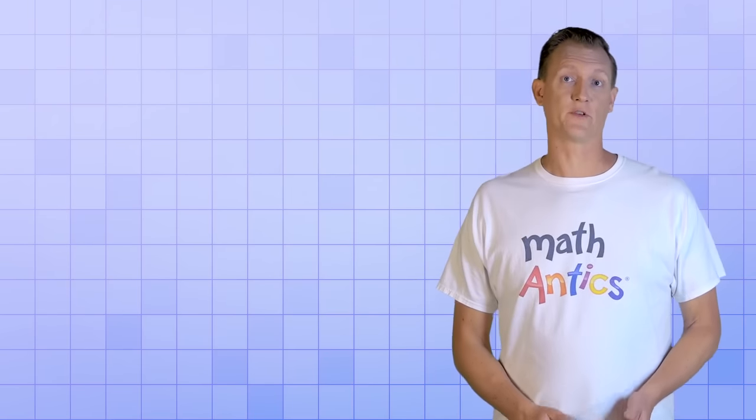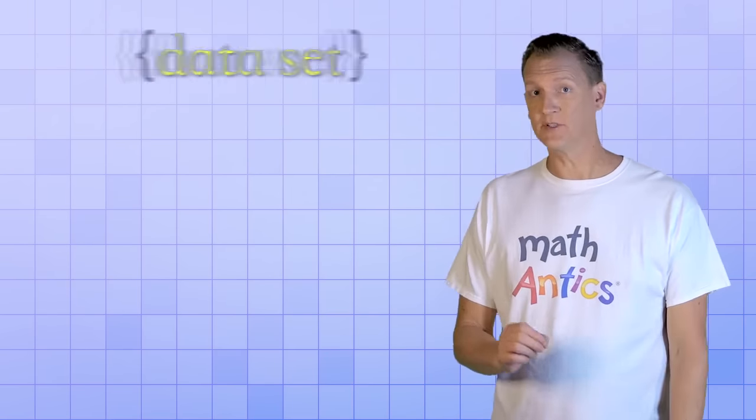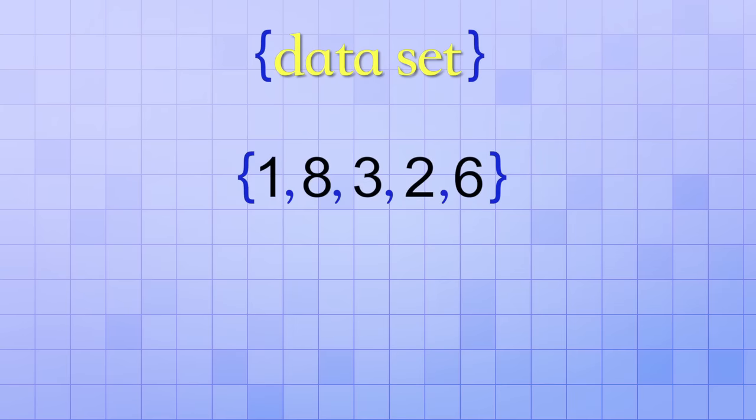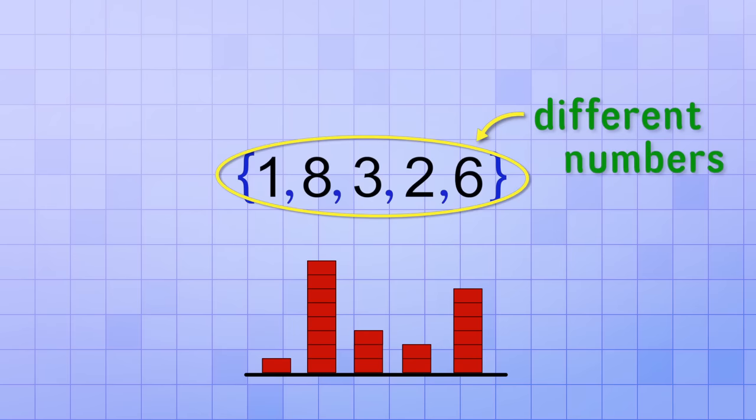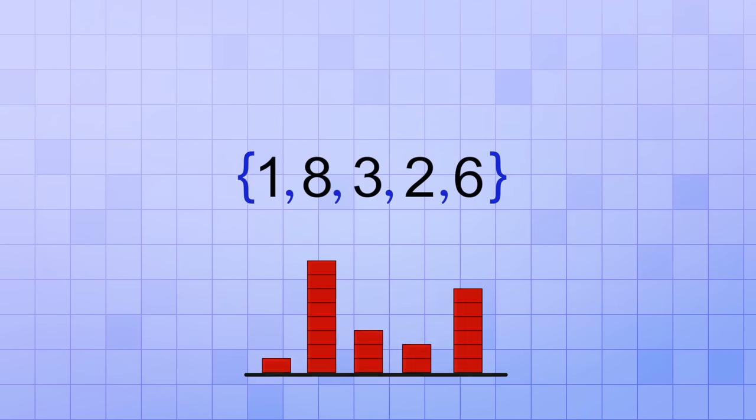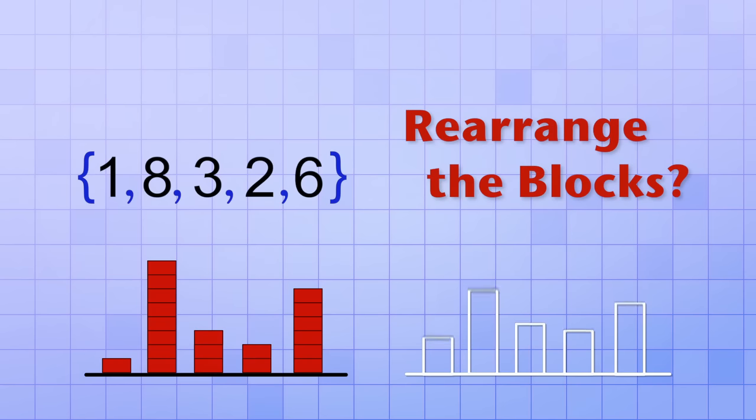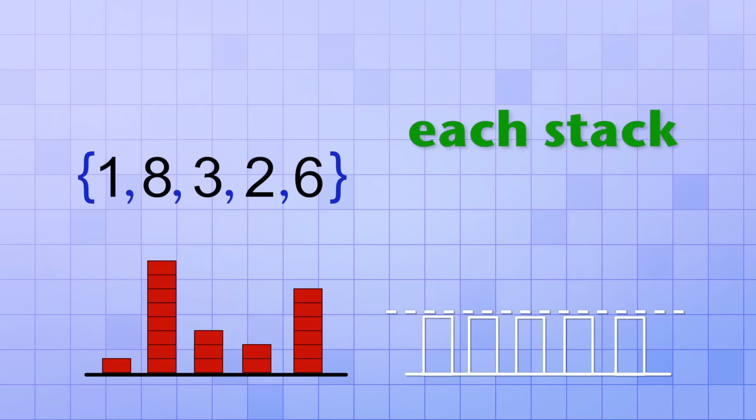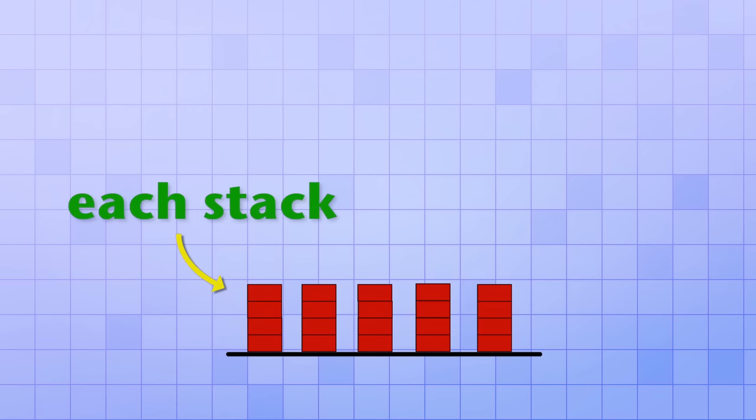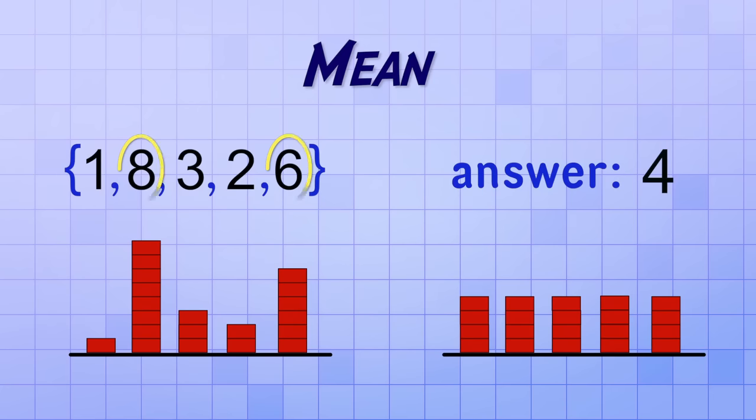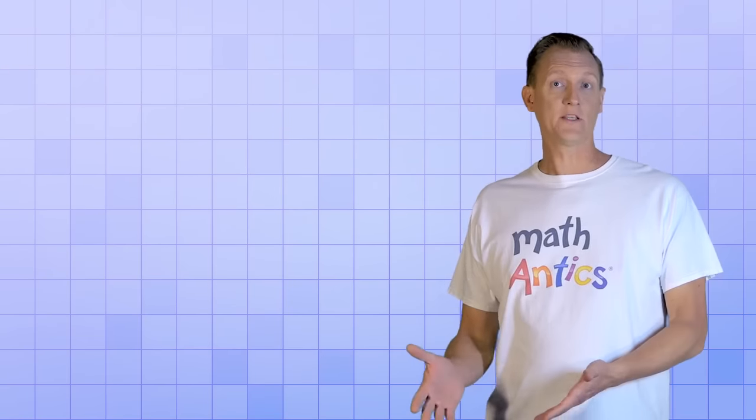The mean, or average, is an extremely useful property. To understand what it is, let's look at a simple dataset that contains five numbers. As a visual aid, let's also represent those numbers with stacks of blocks whose heights correspond to their values: 1, 8, 3, 2, 6. Right now, since each of the five numbers is different, the stacks of blocks are all different heights. But what if we rearrange the blocks with the goal of making the stacks the same height? In other words, if each stack could have the exact same amount, what would that amount be? Well, with a bit of trial and error, you'll see that we have enough blocks for each stack to have a total of 4. That means that the mean, or average, for our original dataset would be 4. Some of the numbers are greater than 4, and some are less. But if the amounts could all be made the same, they would all become 4. So that's the concept of the mean.